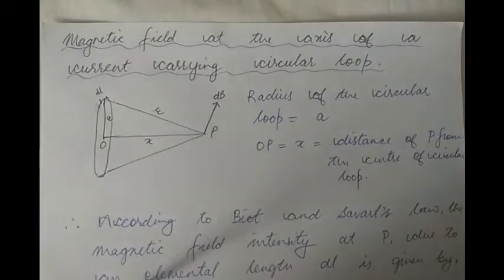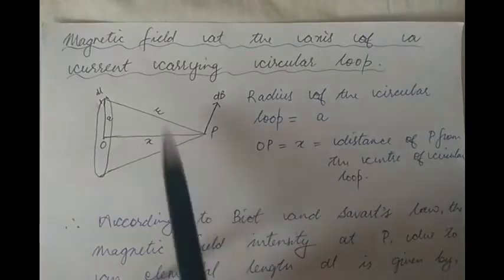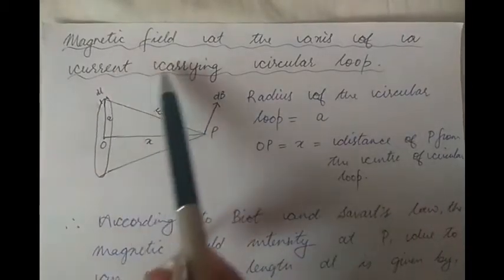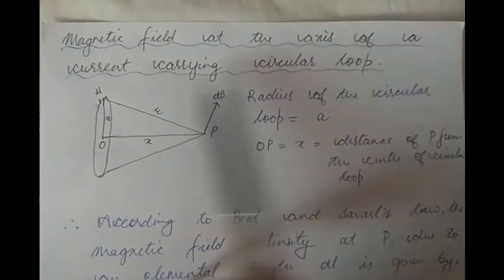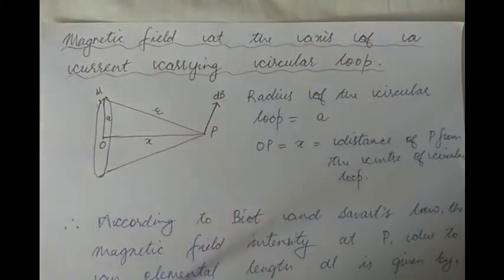In this video, we are going to look at the second application of Biot-Savart's law — to find the magnetic field at the axis of a current carrying circular loop.